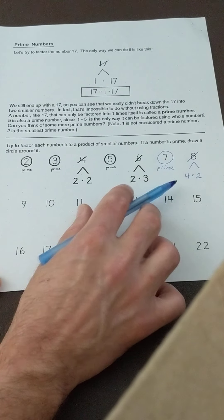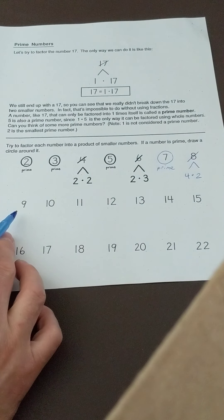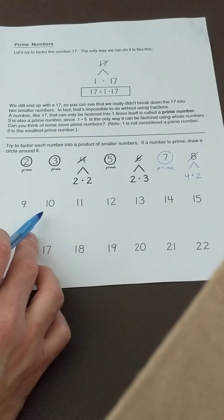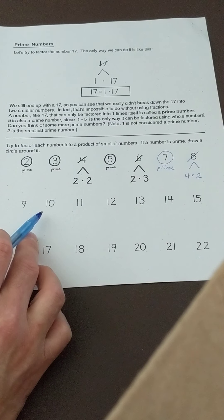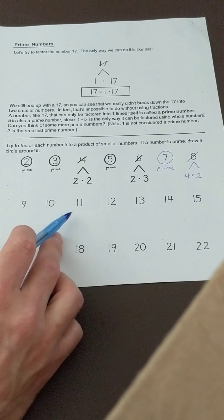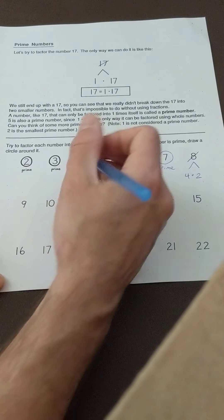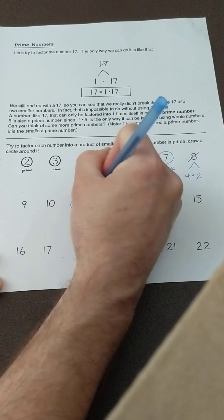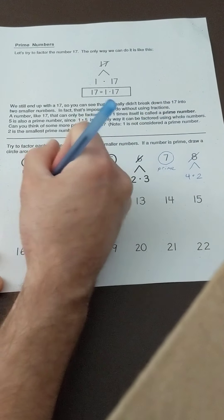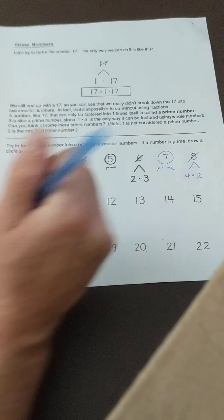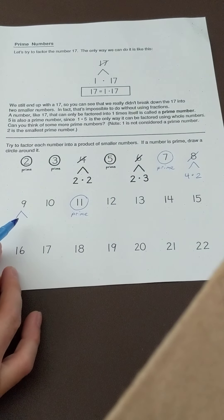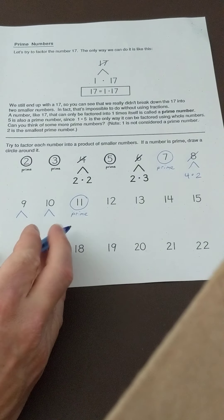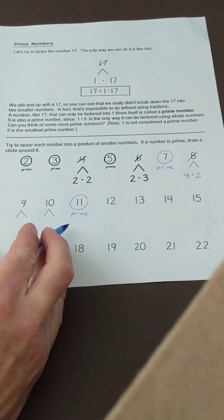Let's do a couple more. Nine is also not prime, so it's going to need a factor tree. Ten can be made with five times two. Eleven is going to be the next prime number. So we should have a factor tree for nine and for ten. Eleven will be our next prime number.